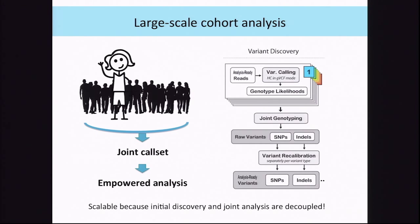GATK includes a specific workflow that allows you to do really large-scale cohort analysis. If you've heard of Daniel MacArthur's work with the EXAC project, that's how they did it. Right now, we have the capability to jointly analyze 100,000 exomes. Our mission in the next few years is to scale that up to whole genomes and also to the next order of magnitude — so we're talking million samples. But don't worry if you have a small cohort; this is also applicable and will help your small cohort get better calls.